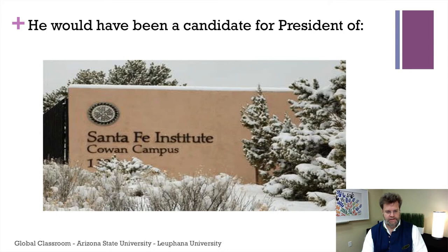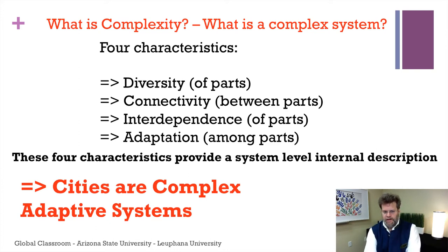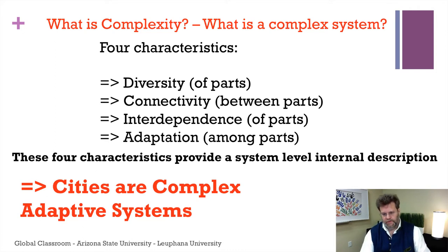What is a complex adaptive system? It generally has four characteristics. We look at a system and we see a diversity of parts. We also see interesting connectivity between parts. The parts are heavily interdependent — that means the behavior of one part in the system influences the behavior of any other part. And there is adaptation among the parts, meaning complex adaptive systems are generally fine-tuned. They are well-oiled machines.